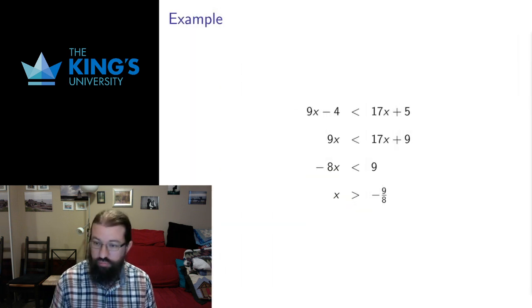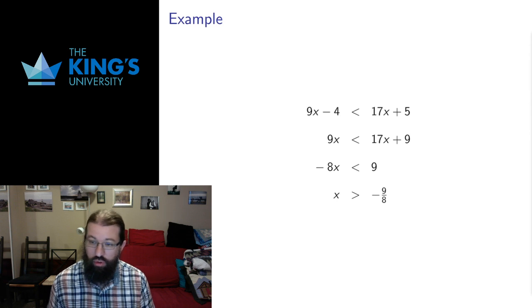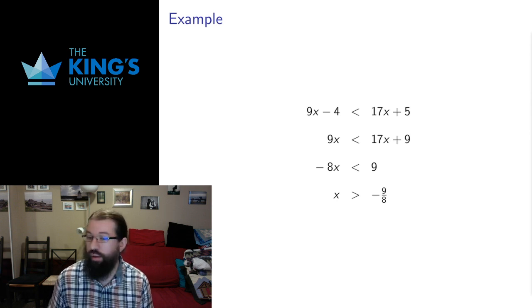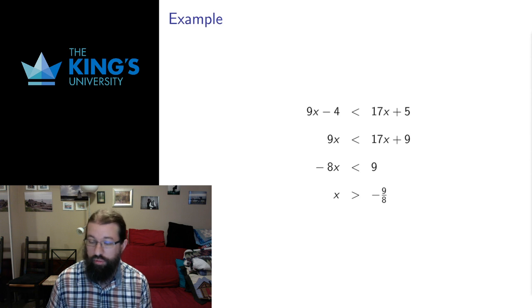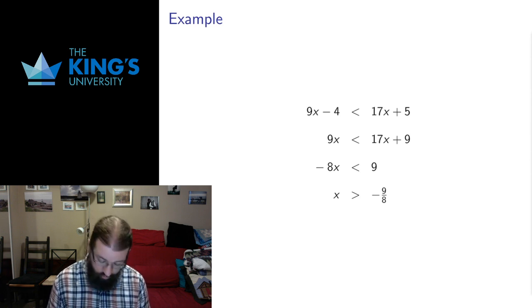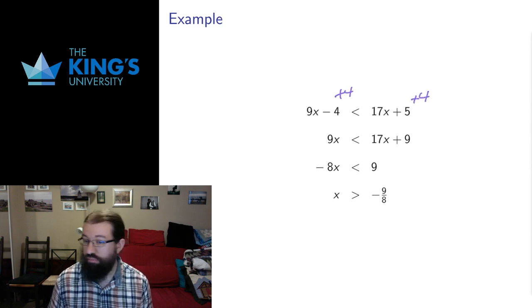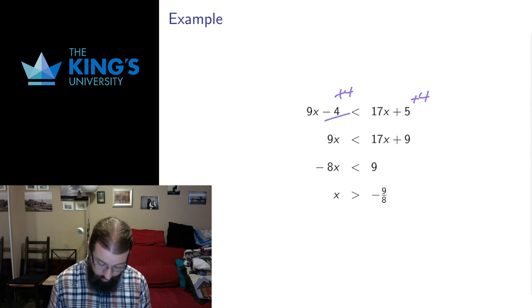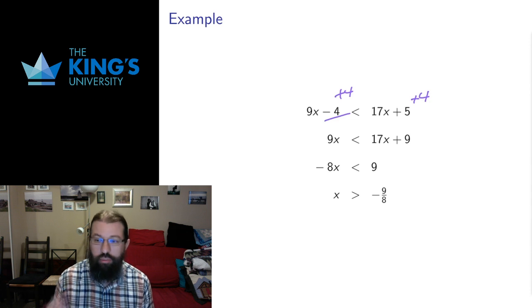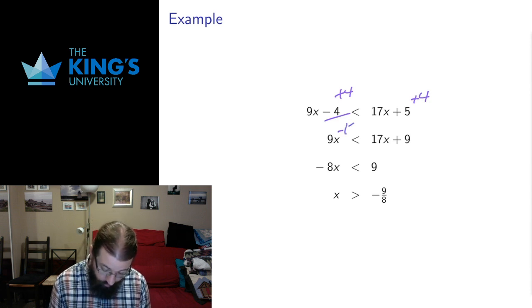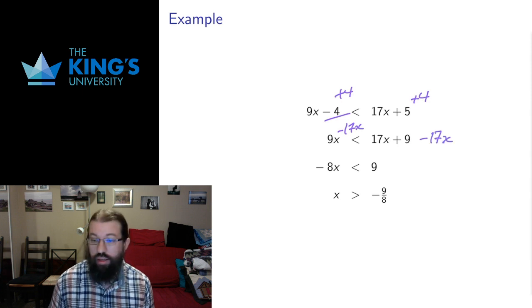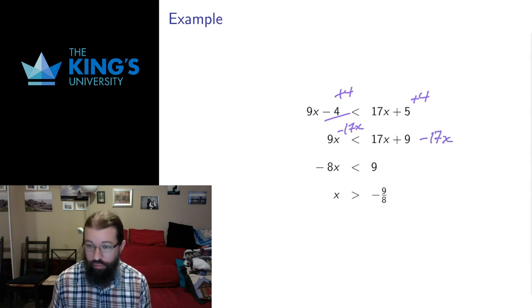Here's an example: what numbers, when I multiply by 9 and subtract 4, are less than the same number multiplied by 7 and add 5? Notice the variable appears on both sides — that's fine. I can add 4 to both sides, which preserves the inequality, so minus 4 plus 4 goes away and 5 plus 4 is 9. Then I'm going to subtract 7x from both sides so I can work with a single variable.